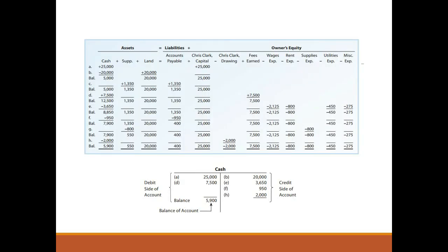In our last video, we already learned about how to analyze a transaction using the equation, and this is the summary from transaction A until H. From this illustration, the receipt or increase in cash of $25,000 in transaction A is entered on the debit or left side of the cash account. The letter or date of the transaction is also entered into the account so that if any questions later arise related to the entry, it can be traced back to the underlying transaction data. In contrast, the payment or decrease in cash of $20,000 to purchase land in transaction B is entered on the credit right side of the account.